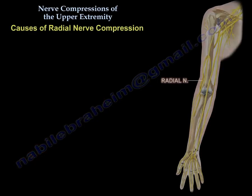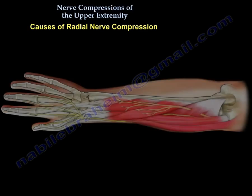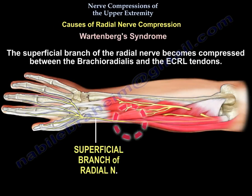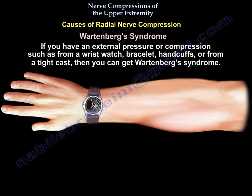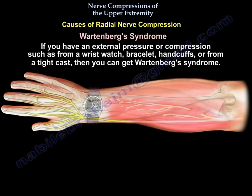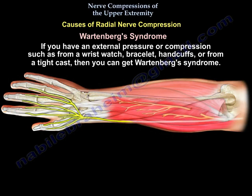Wartenberg syndrome involves the superficial sensory branch of the radial nerve, which gets compressed between the brachioradialis and the extensor carpi radialis longus. External pressure or compression from a wristwatch, bracelet, handcuffs, or a tight cast can cause that syndrome.